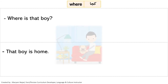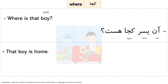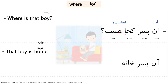Now we look at the interrogative 'koja' (where). First sentence: 'Where is that boy?' — 'pesar' means boy. Formally: 'an pesar koja hast'. Informally 'an' becomes 'un', and 'koja hast' stays but we drop the 'he' part since 'koja' ends in the long vowel aleph, giving: 'un pesar koja hast'. The answer: 'That boy is home' — 'khane' (home), informally 'khune', so: 'un pesar khune hast'.